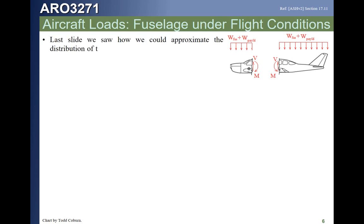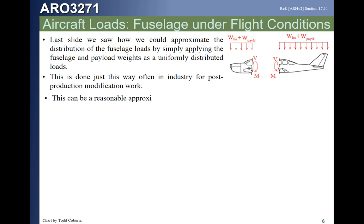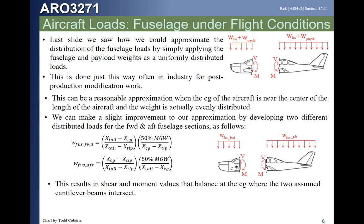The previous approach was an approximate value, which is fine, but we can do better. Our improvement is to calculate the distributed load on the forward fuselage using one ratio and on the aft fuselage using another ratio. Instead of one distribution of loading for the entire aircraft, we will have two uniform distributions of load — one for the forward fuselage and one for the aft fuselage. This gives us the same CG as we put in, and is the approximation we will use in this class.